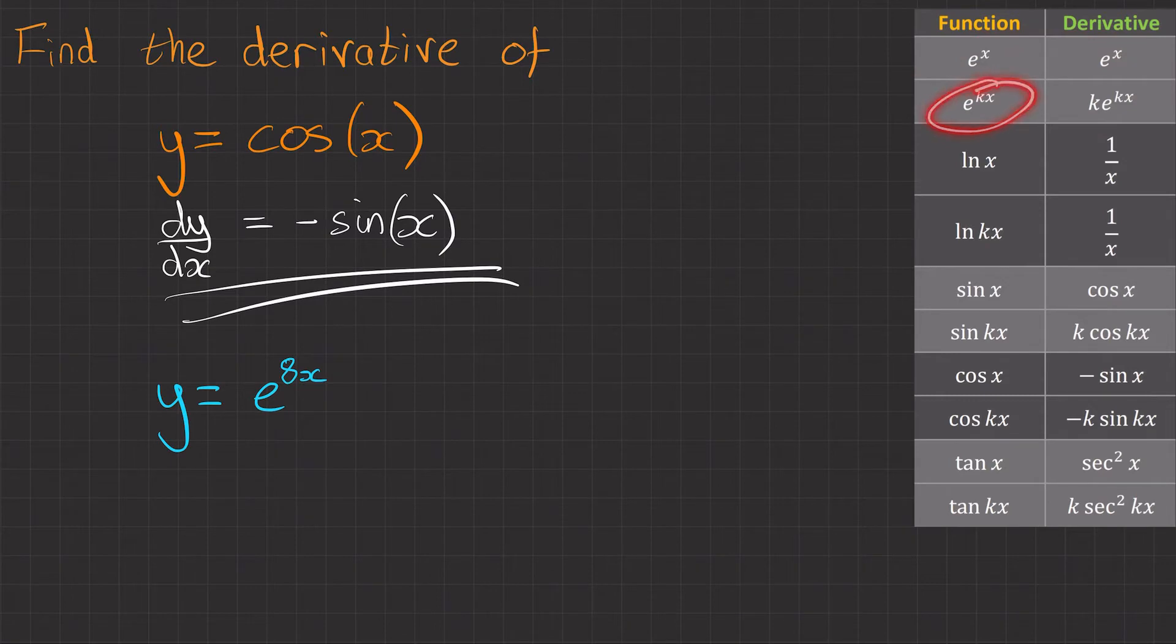We want to look at e to the kx as we've got a constant here. So our derivative of this function is ke to the kx. So if we write this, dy/dx equals 8e to the 8x and that's it.